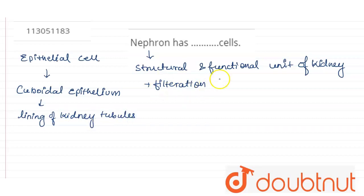This nephron has a tubular structure. That's why cuboidal epithelium is present at the lining of this nephron.